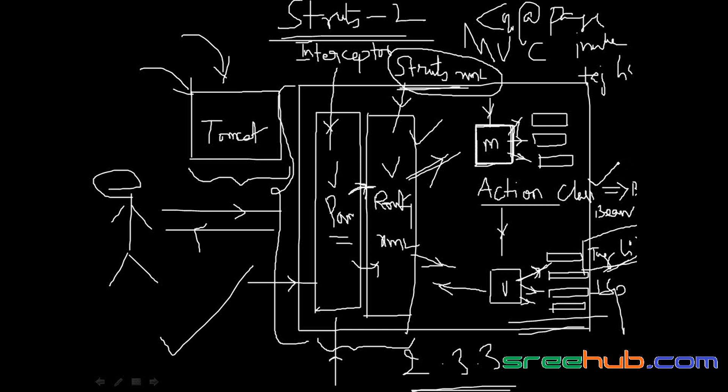The model here will be our action classes. Action classes will be like beans. As of now, let's think of models as a normal action class which contains methods and properties. Properties are nothing but your data settings. This action class should have a default constructor, because we are going to use the action class name directly in our XML.